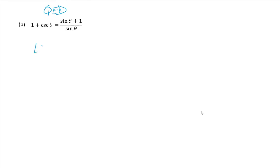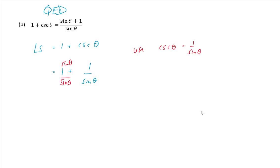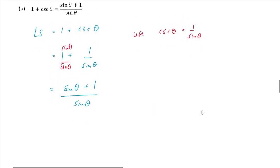Next one. I would choose the left side, which is 1 plus cscθ. Let's use the reciprocal identity: cscθ equals 1 over sinθ. So we get 1 plus 1 over sinθ. We need a common denominator, so we multiply 1 by sinθ over sinθ. That gives sinθ plus 1 over sinθ. And we've shown the left side equals the right side — done.